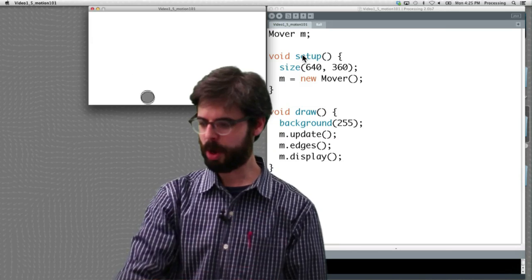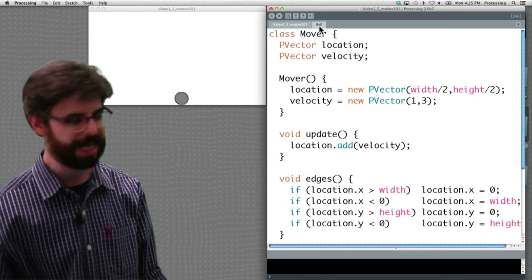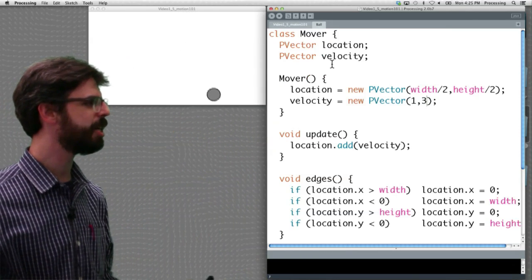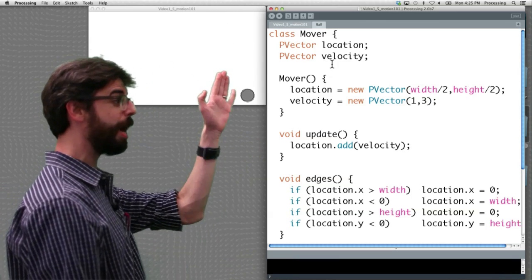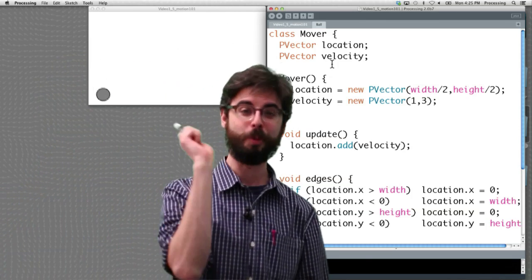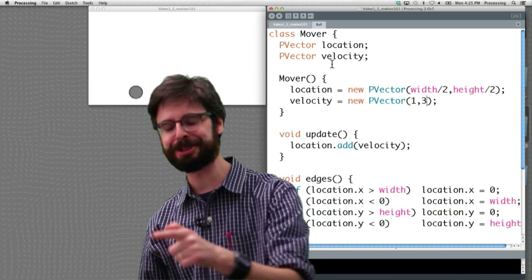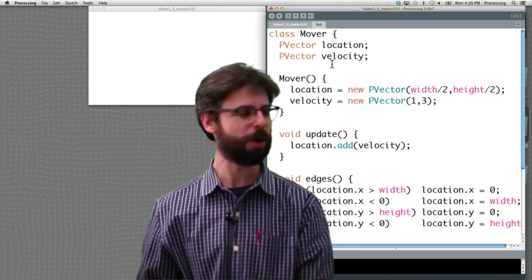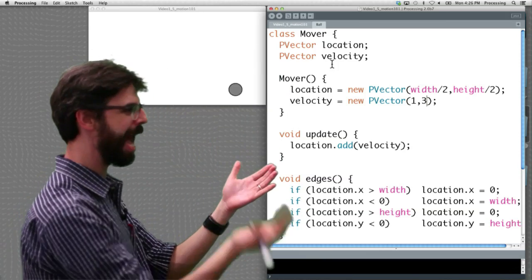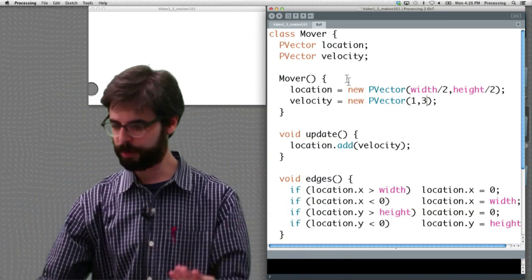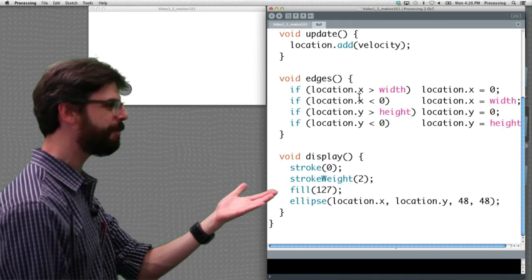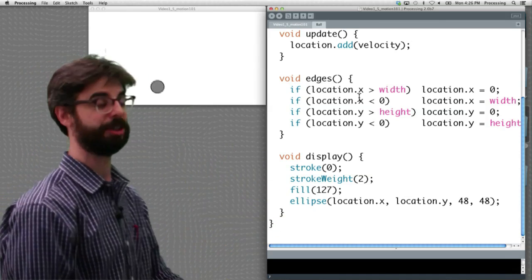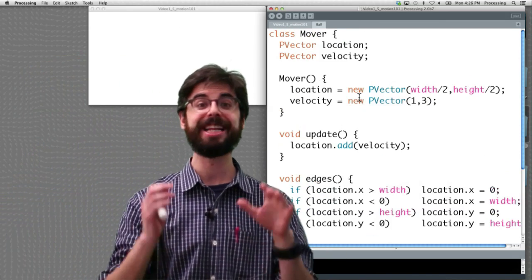So what's important about this? If you recall, if we look at the class, we can see here that we have an object with two vectors. Location describes where it is, velocity describes the change in location over time. And what do we do? In the update function, we add velocity to location. That is our model here.